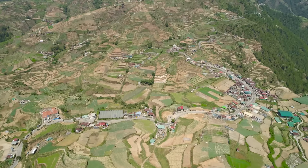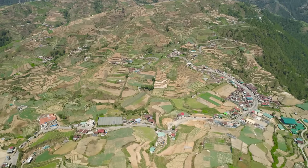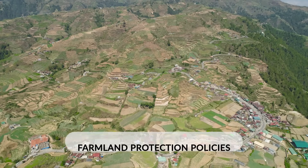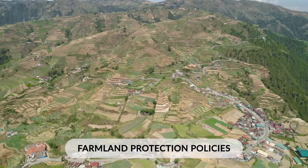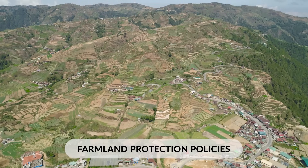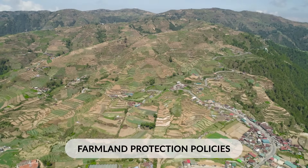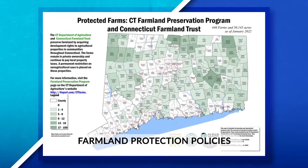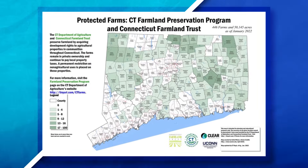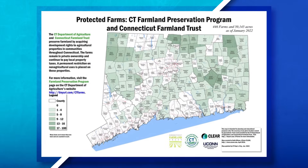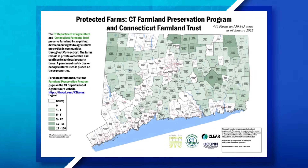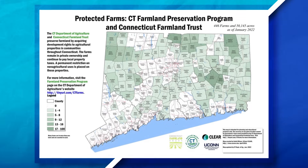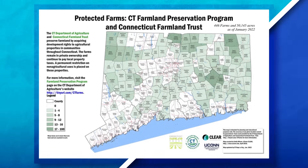Cities looking to protect the countryside and farmland around an urban area can also pass farmland protection policies, which focus on preserving agricultural land. This can be accomplished by zoning land for agricultural use only, or by governments or conservation organizations purchasing the rights to certain land to make sure it cannot be developed.